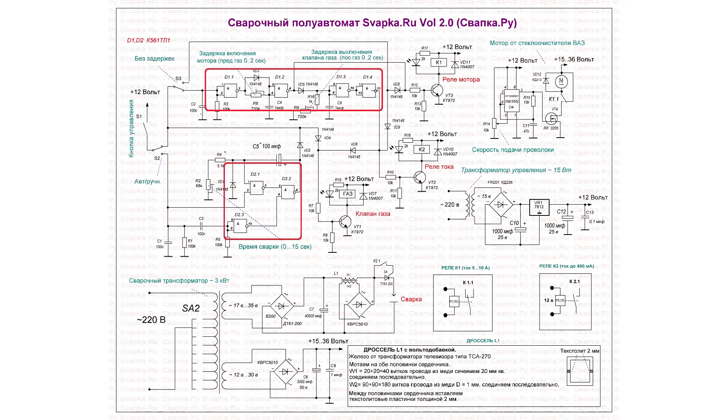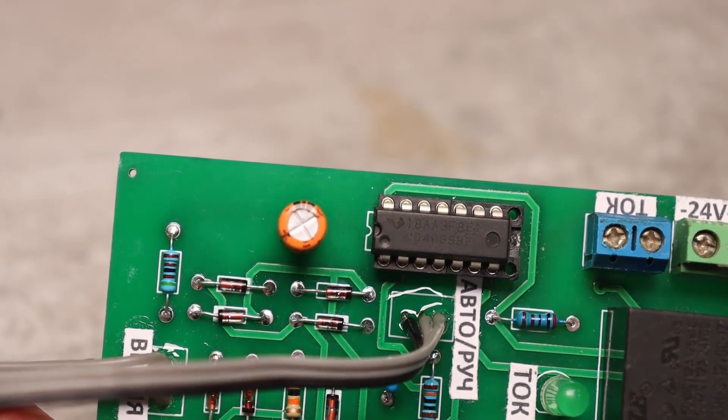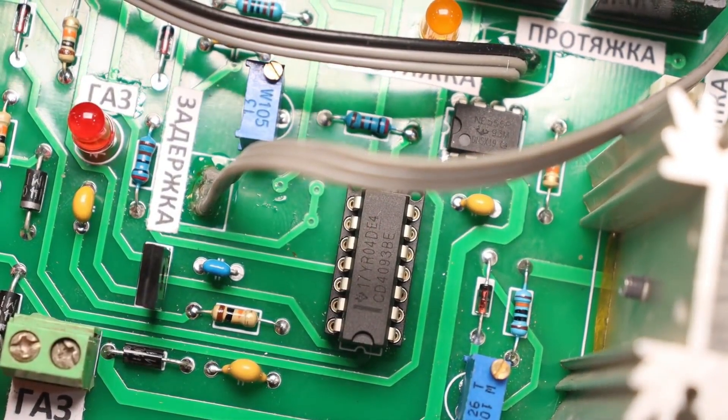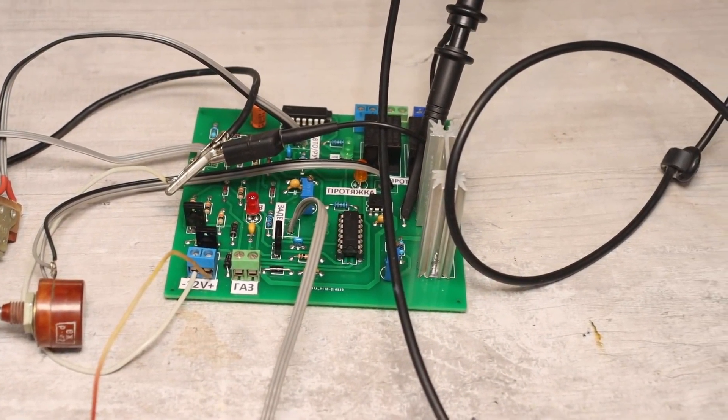The schematic includes a couple of Soviet microchips in the form of Schmidt-Triggers K561-TL1. If you can't find those, you can use the imported equivalent CD4093. I'm sure you'll find all the other components on the board in your stash.